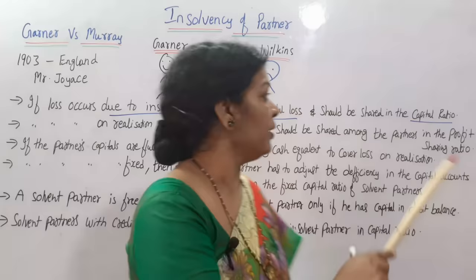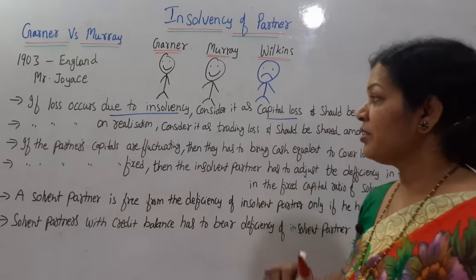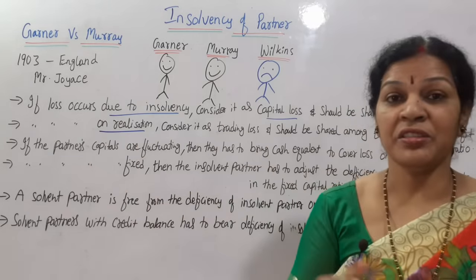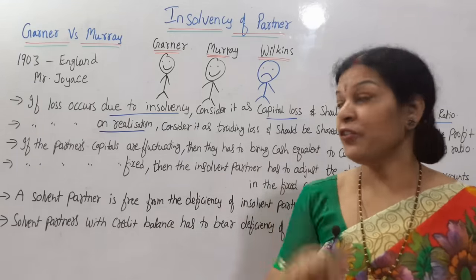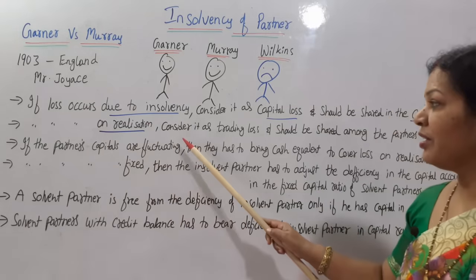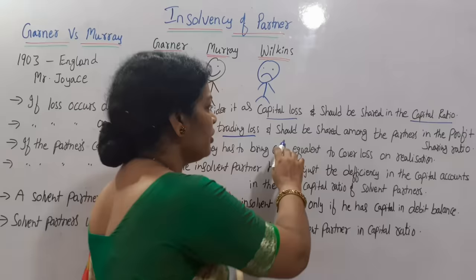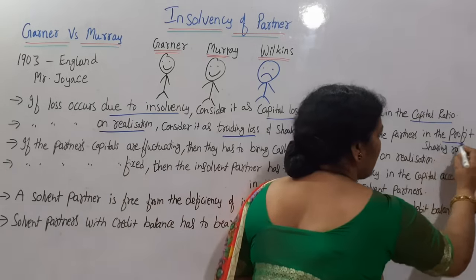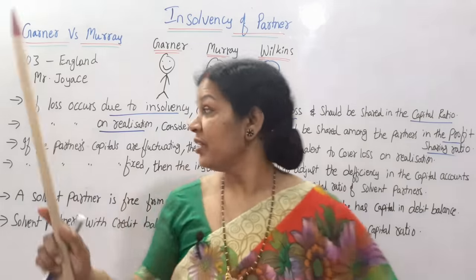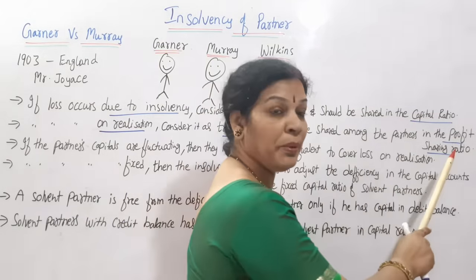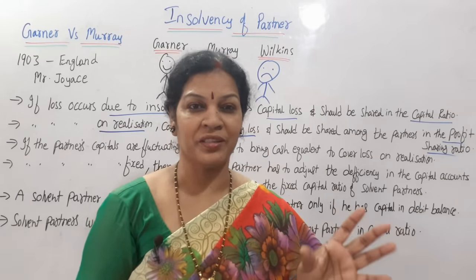The second point: if loss occurs on realization - that is, when we sell the assets - if we get a loss on realization, consider it as trading loss. In such a case, it should be shared among the partners in the profit sharing ratio. So if it is insolvency loss, then capital ratio; if it is realization loss, then it should be shared in the profit sharing ratio - 2:2:3 or 2:1 something like that.